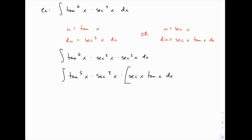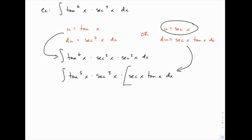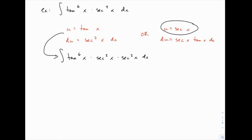If we let u equal secant, we'd write this as tangent to the fifth times secant to the third times secant tangent, so that secant tangent dx serves as du. But the second option is problematic: we'd need to write everything in terms of secant, and tangent to the fifth — an odd power — poses a problem. We have an identity relating tangent squared and secant squared, so any even power of tangent is fine, but an odd power is not.